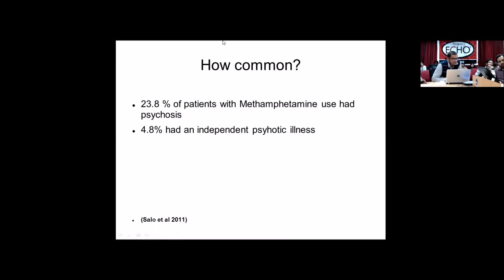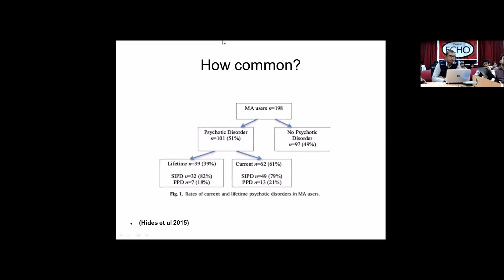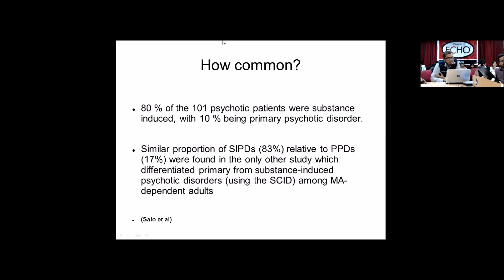Salo et al. from America noted in their study on psychiatric comorbidity in patients with amphetamine use that about 23.8% of patients with methamphetamine use had psychosis, and 4.8% of those had an independent psychotic illness. It appears the prevalence of psychosis in methamphetamine users is quite high. Hives et al., a 2015 Australian study, divided methamphetamine users into those with and without a psychotic disorder, and found about 80% of psychotic patients had substance-induced psychosis and 10% had a primary psychotic disorder — a similar proportion of substance-induced versus primary psychotic disorders.